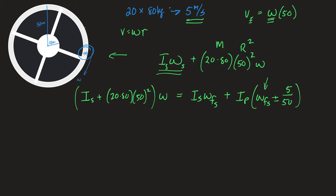I don't know what the final omega is — that's the term I'd be solving for. The people are either adding to that or going against it. This allows me to use a relative speed. We know everything on the left side with omega being 0.447 — your job is to solve for omega final now.